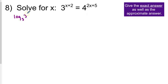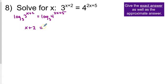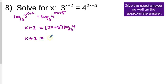Take log base 3 of the left and log base 3 of the right. On the left, bring down the x plus 2, and log base 3 of 3 is just 1, so you don't have to write that. On the right, bring down 2x plus 5 — be sure to put it in parentheses — and that's multiplied by log base 3 of 4. Now distribute to get rid of the parentheses: x plus 2 equals 2x times log base 3 of 4, plus 5 times log base 3 of 4.